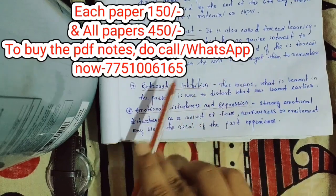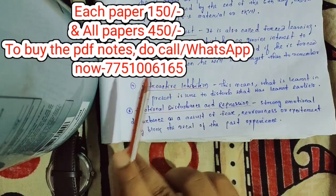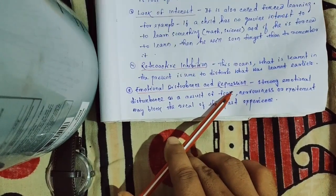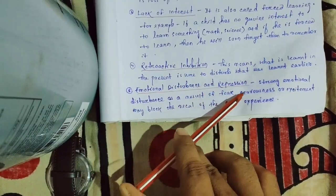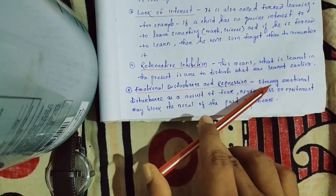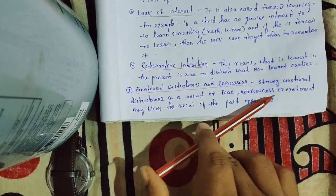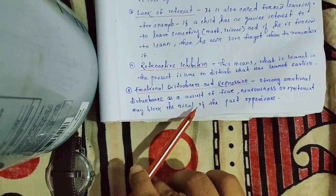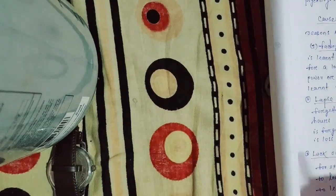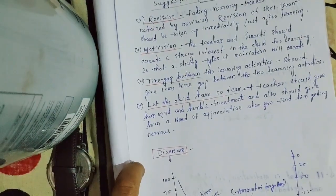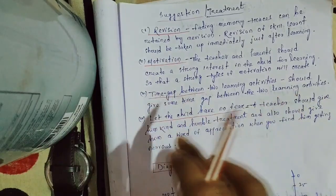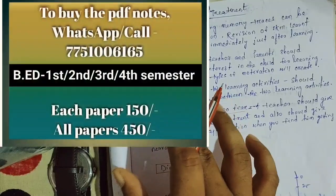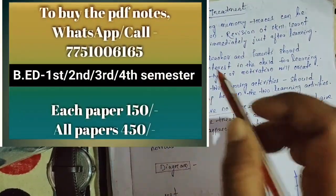The last cause is emotional disturbance or repression. Strong emotional disturbance as a result of nervousness or excitement — especially negative excitement — can block the recall of past experiences. This is one of the causes of forgetting.